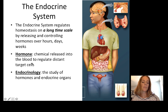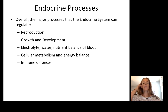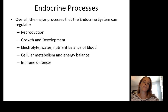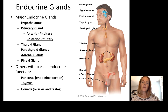A hormone is a chemical released into the blood to regulate distant target cells. Endocrinology is the study of hormones and the endocrine organs that produce and release them. The major processes that the endocrine system can regulate are homeostatic processes: reproduction, growth and development, electrolyte, water, and nutrient balance of the blood, cellular metabolism and energy balance, and immune defenses. This is a review of the anatomy to give you a slide to go back to in case you forget where each of these glands is located.